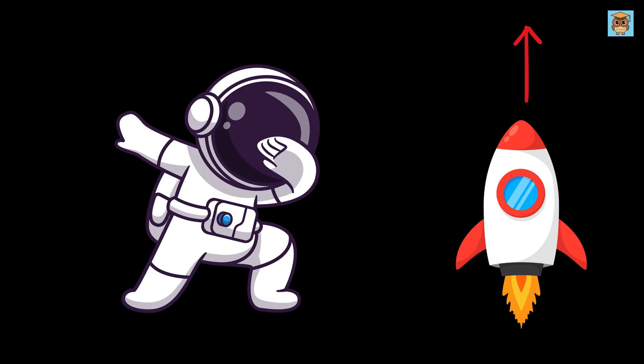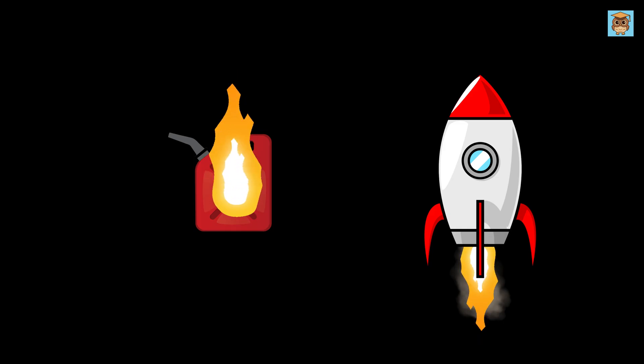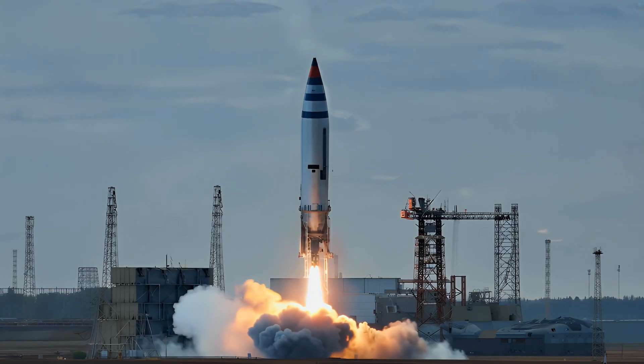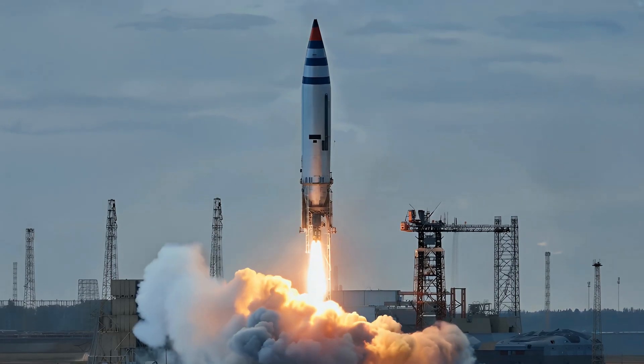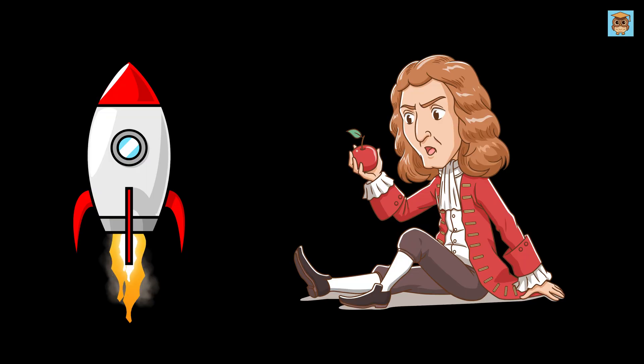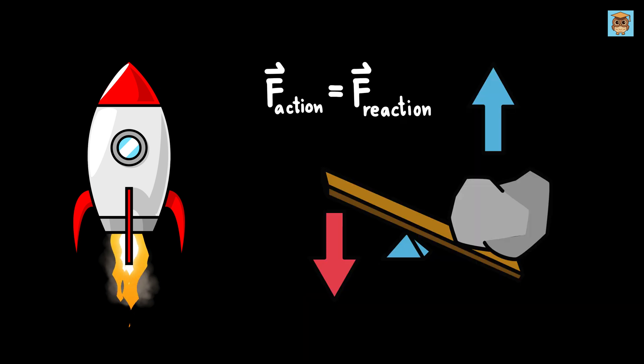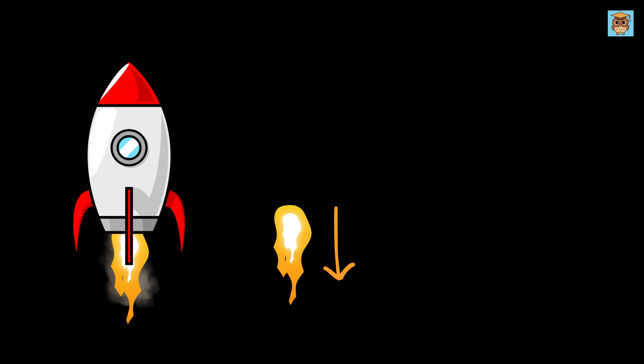Let's dive into understanding how a rocket works in a very simple manner. Picture a rocket as a big tank filled with fuel. The fuel inside is burned up to make hot gases which are then ejected from the back side of the rocket to push the rocket in the upward direction. This is simply because of Newton's third law of motion, which states that every action has an equal and opposite reaction.